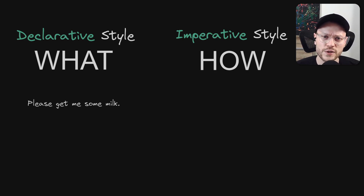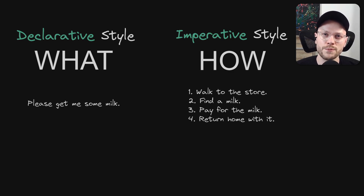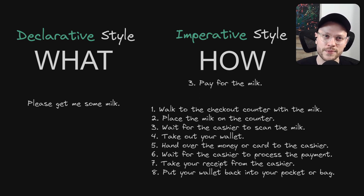But imperatively, I don't state the final outcome. Instead, I list all the steps necessary: walk to the store, find the milk, pay for the milk, return home with it. What examples on the web often miss is that each of those imperative instructions is also quite declarative — you could split the 'pay for the milk' step into eight distinct steps. So in natural language, it's actually pretty hard to draw a clear line between those two styles.